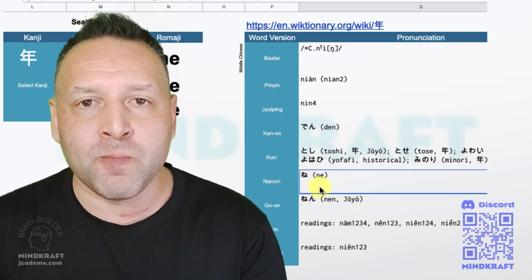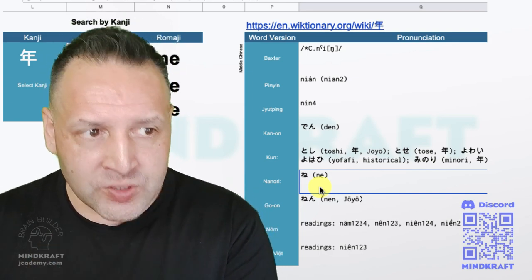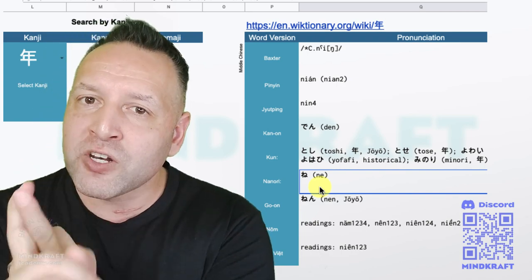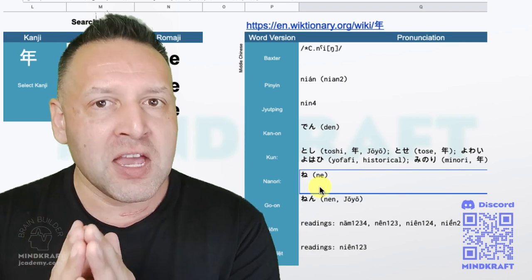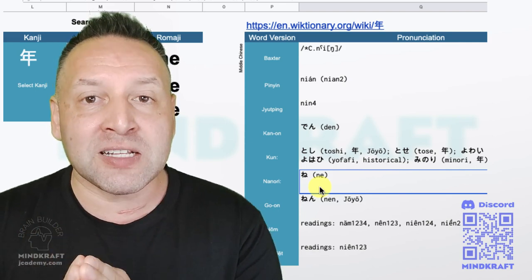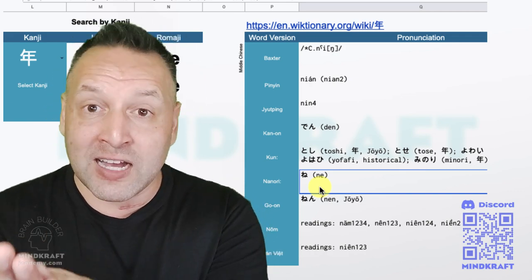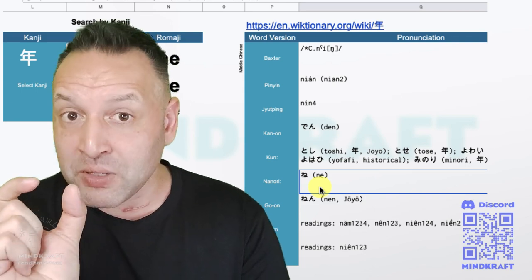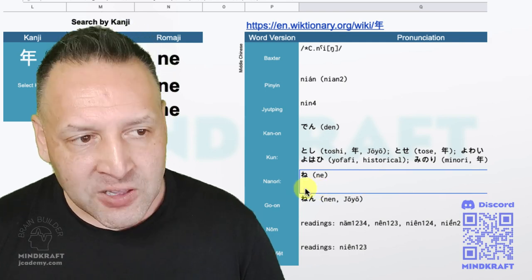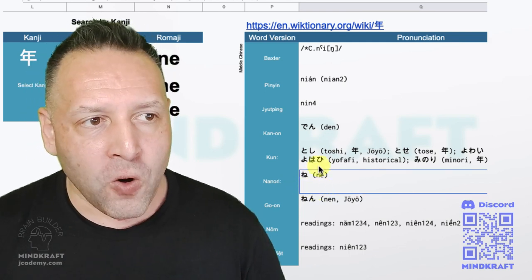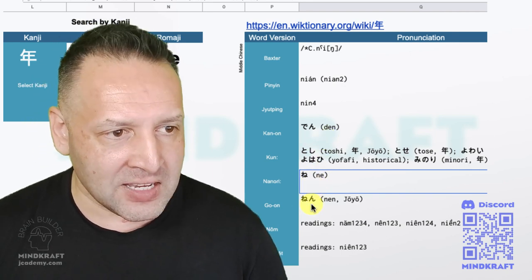There's also the nanori pronunciation for some kanji, actually for a lot. You will have your normal kun and your kan and your go-on for it, but there's also the nanori pronunciation that in some cases doesn't resemble any of those. But they're very special irregular pronunciations of kanji that are usually used in people's names. So sometimes even if you think you know a kanji, when you see it written in somebody's name, it's not going to be pronounced the way that you think it will be the nanori. And so the nanori pronunciation for this character here is ne, rather than nen or nen.